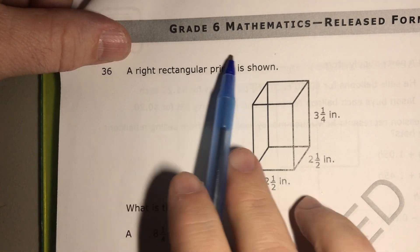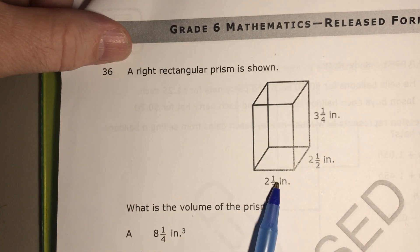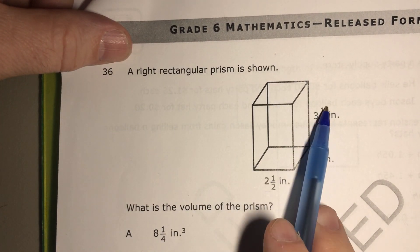So this is from the released EOG. A right rectangular prism is shown. It gives the three dimensions, the length, the width, and the height.